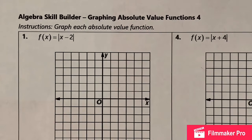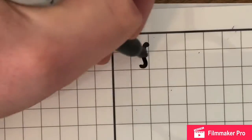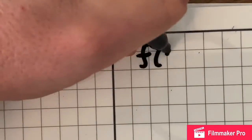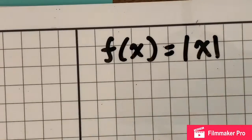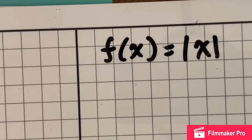First of all, when we talk about the absolute value function, as we learned in class, the absolute value function is a V shape. If it's just f(x) — or y — equal to the absolute value of x, that graph is what we call a parent function.